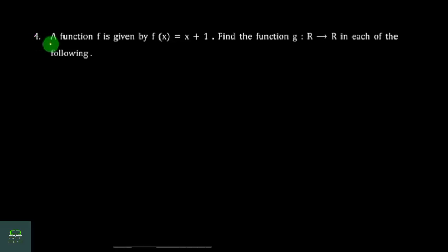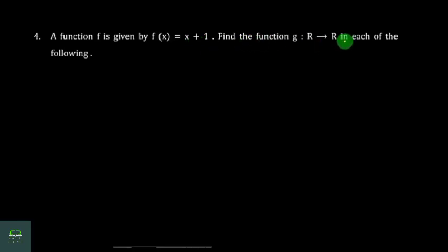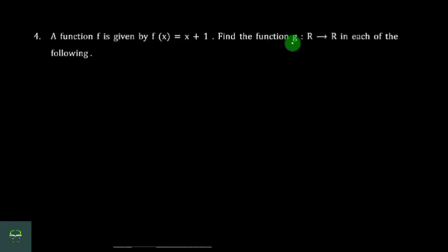Question number 4. A function f is given by f of x equals x squared plus x plus 1. Find the function g in each of the following. After the formula, the function region for that is given.